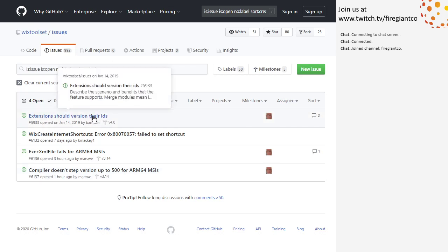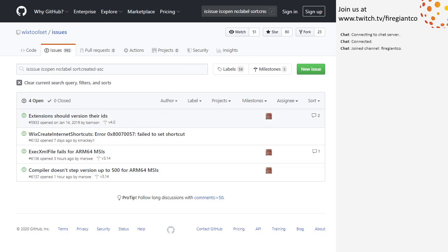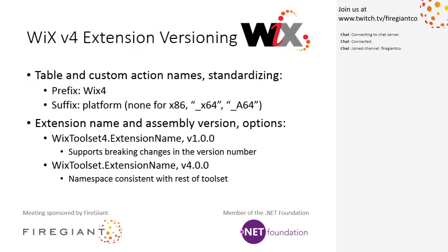Let's go back and talk about this: extensions should version their IDs. There are two areas of versioning assets inside the Wix toolset on major version boundaries. The first set — which I think is less controversial — is table names and custom action names. The general idea is standardizing: prefix everything with Wix4, all table names and custom action names, and then suffix them with the platform — X86, X64, A64 — especially as we add more platforms.